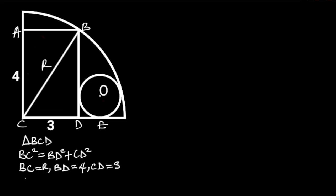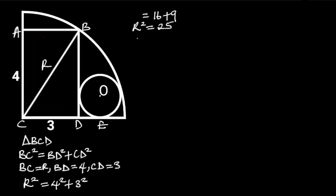Substituting these values in the formula will give us R squared is equal to 4 squared plus 3 squared. 4 squared is equal to 16 and 3 squared is 9. 16 plus 9 is equal to 25. So, R squared is equal to 25. Taking the square root of both sides will give us R is equal to 5.